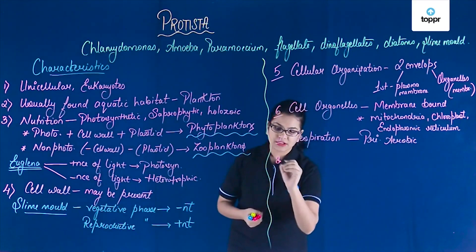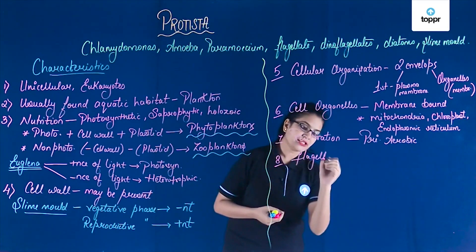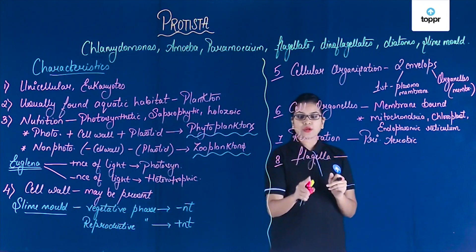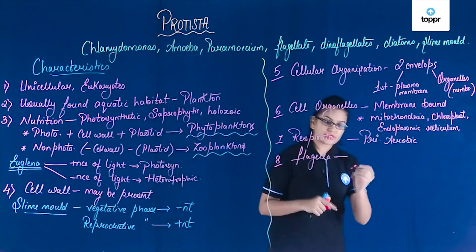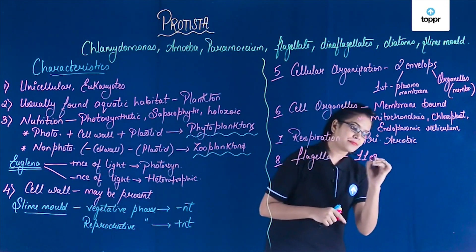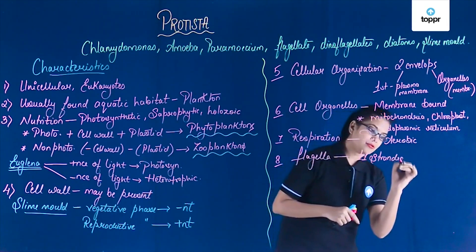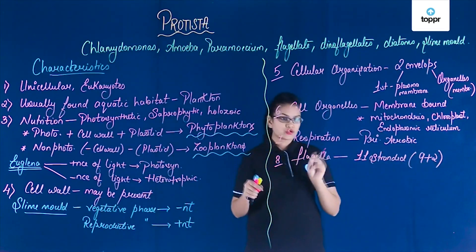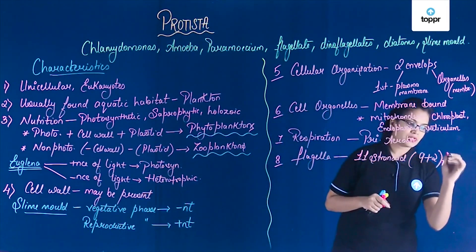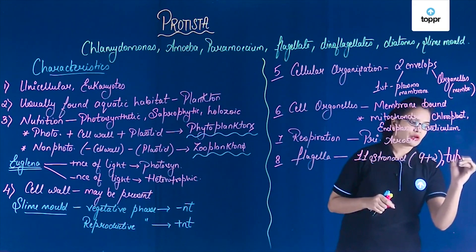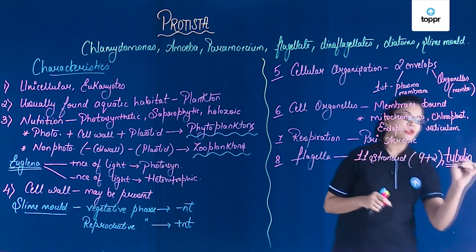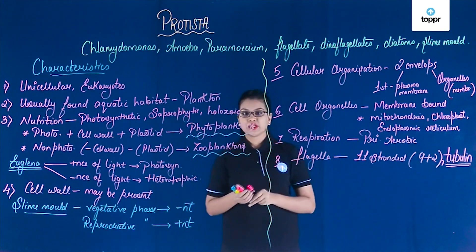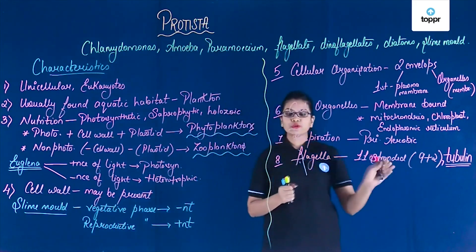Another important feature is the flagella. In Monerans, flagella had a single strand and were made up of flagellin protein. But in Protista, flagella are 11-stranded with an arrangement of 9+2. Importantly, the flagella in Protista are made up of tubulin protein, unlike the flagellin protein found in Monerans.